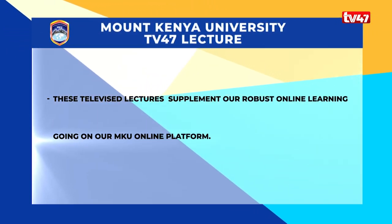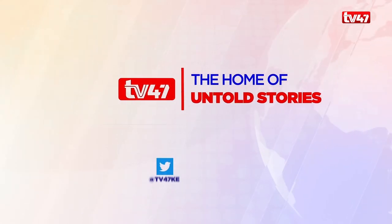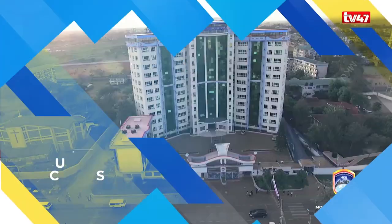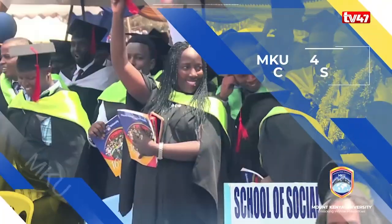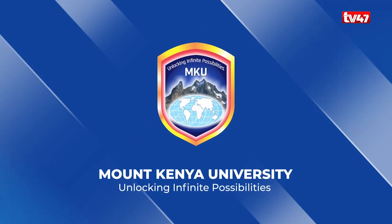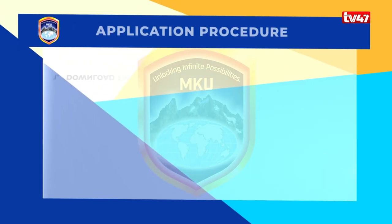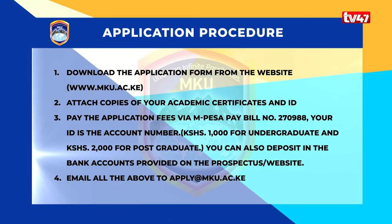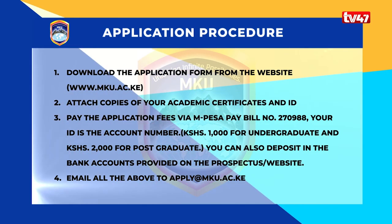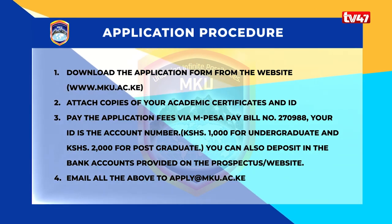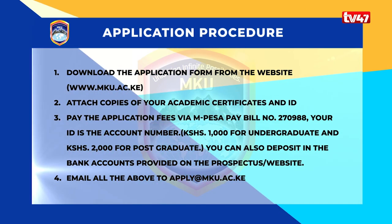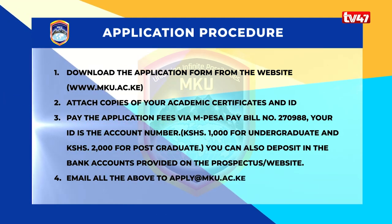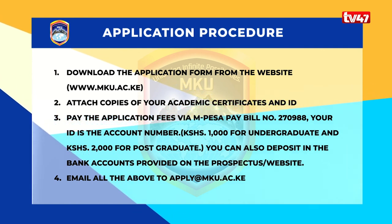Thank you. These televised lectures supplement our robust online learning on the MKU online platform. You can view more televised lectures via our online platform. We are in a digital era and Mount Kenya University knows this. To complete your online application: download the application form from www.mku.ac.ke, attach copies of your academic certificates and ID, pay the application fee via M-PESA paybill number 270988 with your ID as the account number — 2,000 shillings for postgraduate. You can also deposit via bank accounts provided on the website, then email all the above to apply@mku.ac.ke.